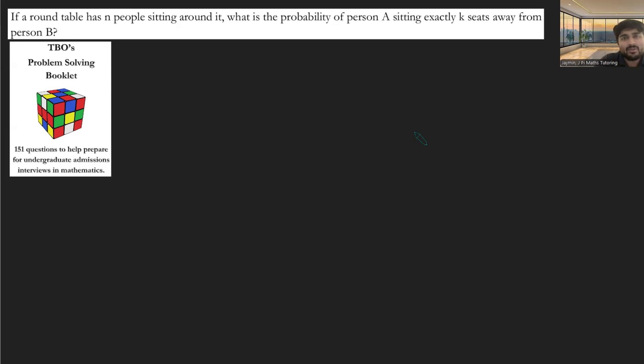Seat one, we pick the name out of a hat, whoever sits there, and seat two, and so on. So it's all nice and uniform. We want to work out the probability of person A sitting exactly K seats away from B. So I guess firstly, we have to assume K is less than or equal to N.